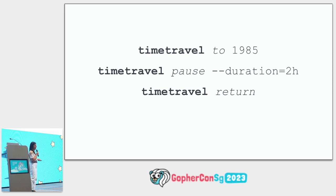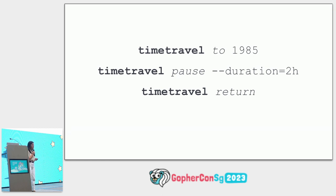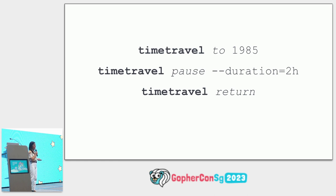Another example: 'time travel pause --duration=2hours'. We start with the application name 'time travel', the verb 'pause' is our command, and we give specificity with the adjective flag 'duration' set to two hours — in natural language: 'I would like to pause time for two hours.' Finally, 'time travel return' — the verb 'return' is intuitive enough to return back to our original point in time and destination.